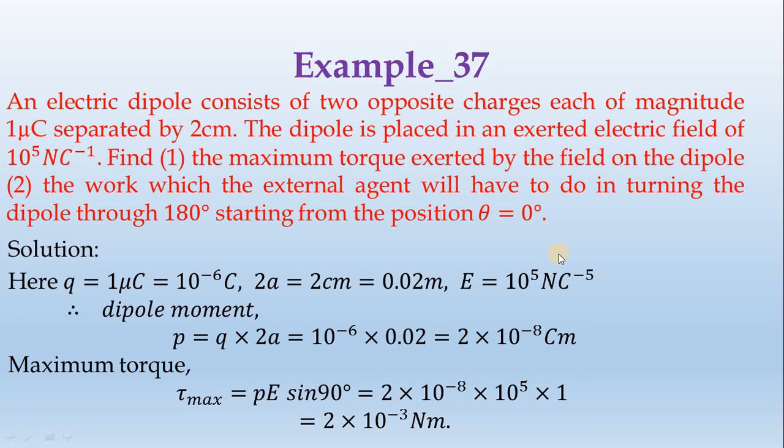Now, given data: the first is microcoulomb in SI unit. Micro equals 10 to the power minus 6, so 10 to the power minus 6 coulomb. Distance between dipole, the main distance 2A equals 2 centimeters.